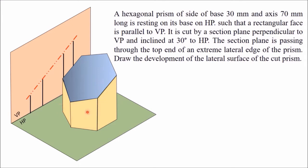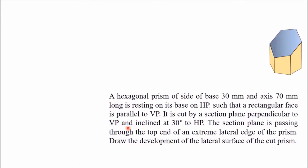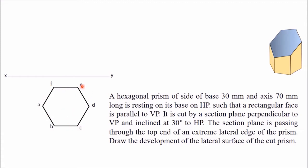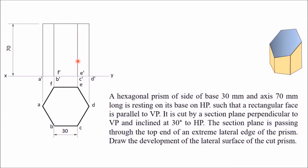To draw the front view and top view of the cut prism, we start with the top view: a hexagon of side 30 mm, where all interior angles are 120 degrees. Name the corners A, B, C, D, E, F — these are all bottom corner points. Project all these points onto the XY line; the base will be visible on the XY line. Project all points upward. The vertical edges from A, B, C, D, E, F are all 70 mm long. When viewed from the front, edges A, B, C, D are visible.